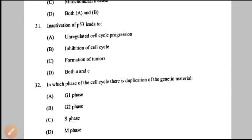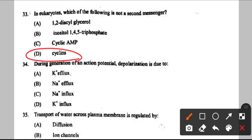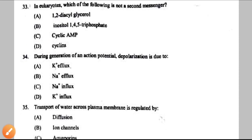Question number 32: in which phase of cell cycle is there duplication of genetic material? S phase — direct question. Question number 33: which of the following is NOT a second messenger in eukaryotes? Second messengers are intracellular signaling molecules released in response to extracellular signals. Cyclin is not a second messenger — option D is correct since the question asks which is NOT one.